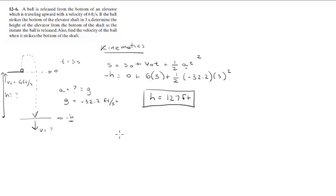And now they want you to find the velocity, and that is very easy using this formula. V equals v0 plus a times t.